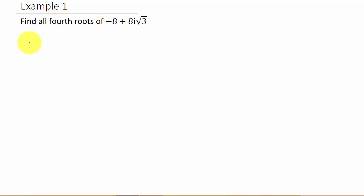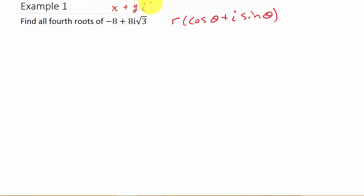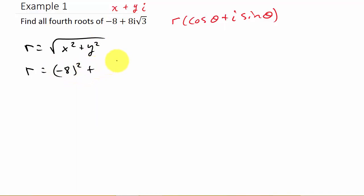So the first thing we have to do is find R, because we need our complex number in the form R times (cosine theta plus i sine theta). We need R and theta. Remember, our number is in the form x plus y times i, and R is equal to the square root of x squared plus y squared. So R is going to be the square root of negative 8 squared plus (8 square root of 3) squared, and this comes out to 16.